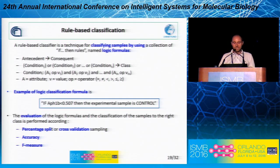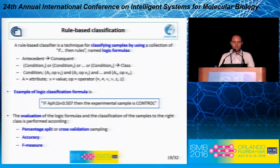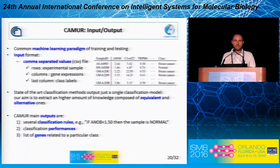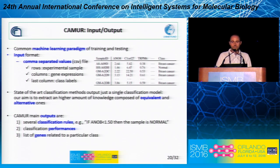Rule-based classifiers extract classification formulas called if-then rules. An example is: if gene Y is below a given threshold and gene X is above a given threshold, then the sample can be classified as tumoral or non-tumoral. The evaluation is performed on the test set based on accuracy and F-measure. As input you have a data matrix with samples on the rows and gene expression values on the columns — you can also have DNA methylation values on the columns — and on the last column of the data matrix you must have the class of the given sample.